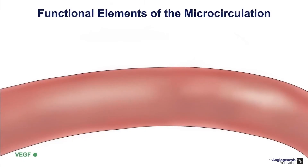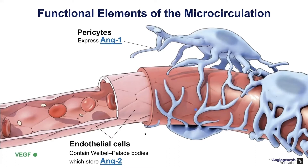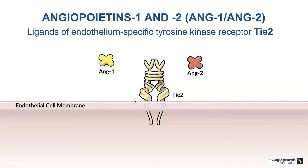What are the functional elements of the microcirculation, and where do angiopoietin 1 and angiopoietin 2 come from? Endothelial cells are the tubes through which our blood courses, and they contain Weibel-Palade bodies which store angiopoietin 2. In comparison, angiopoietin 1 is expressed by pericytes, which line the normal vasculature throughout much of our body. Remember also that platelets also express angiopoietin 1.